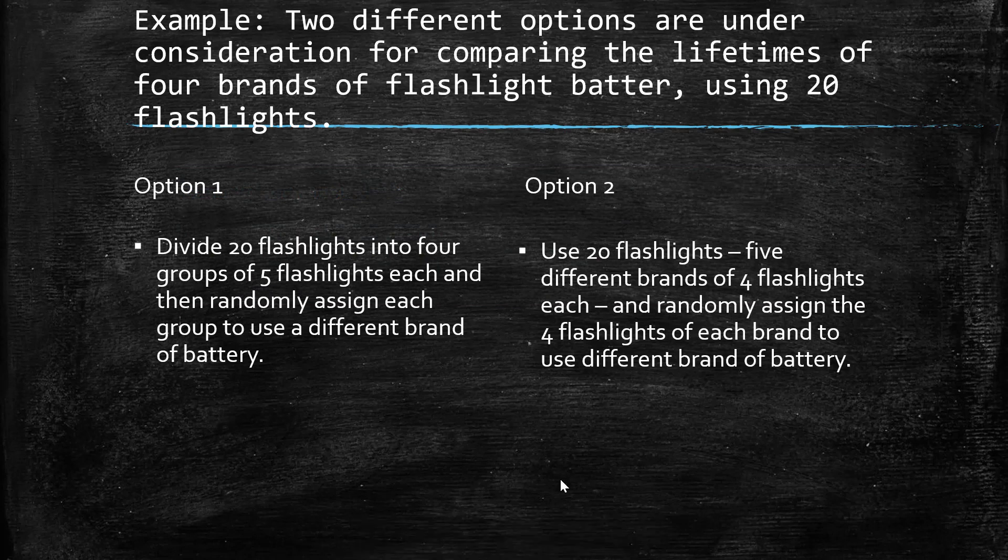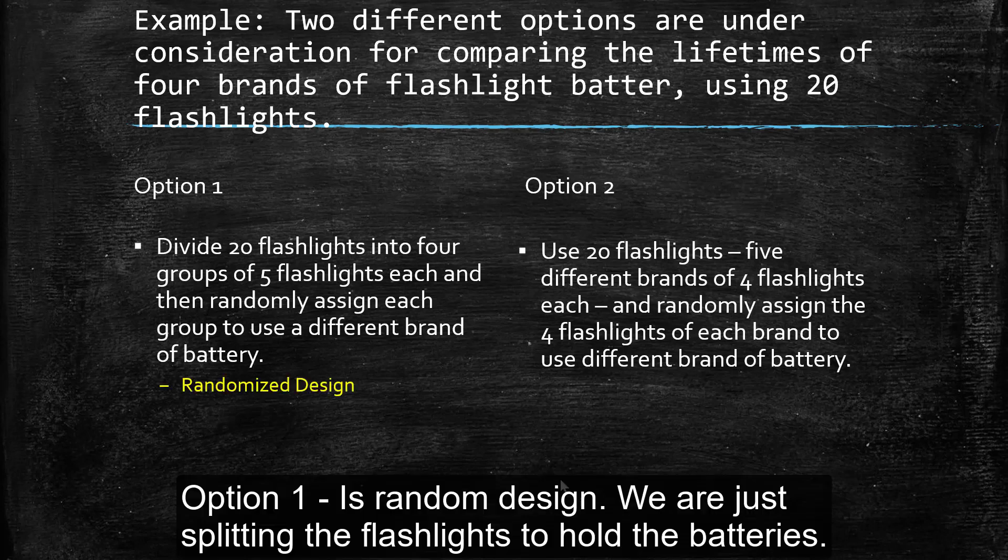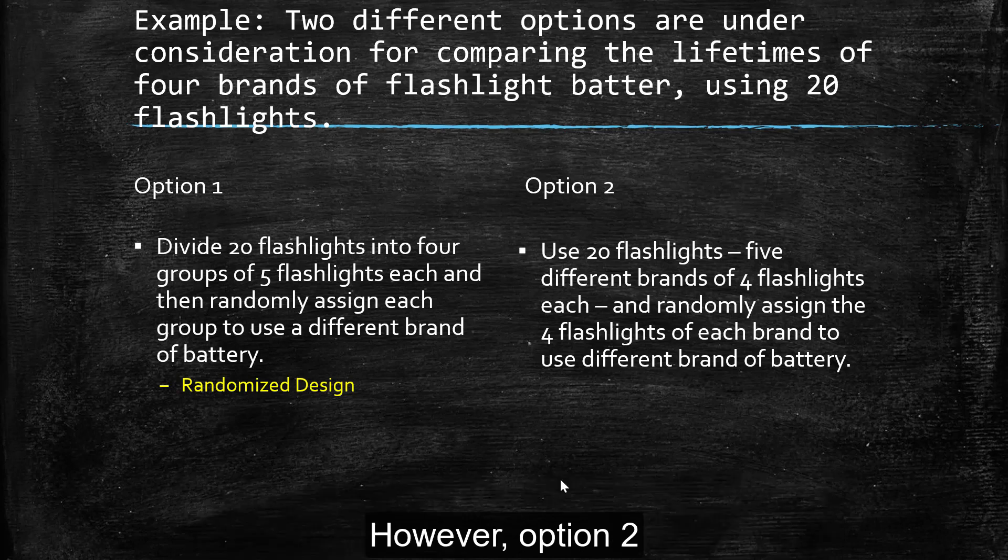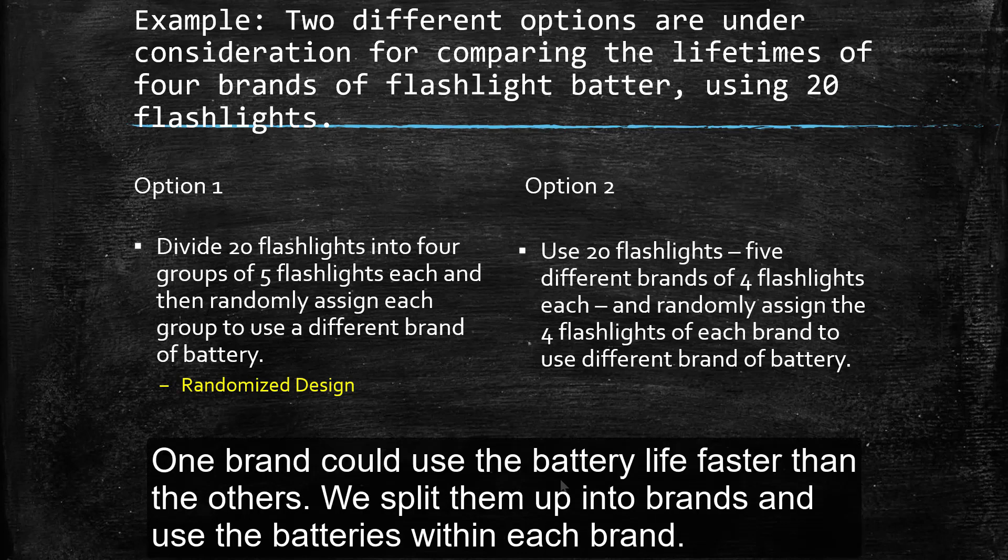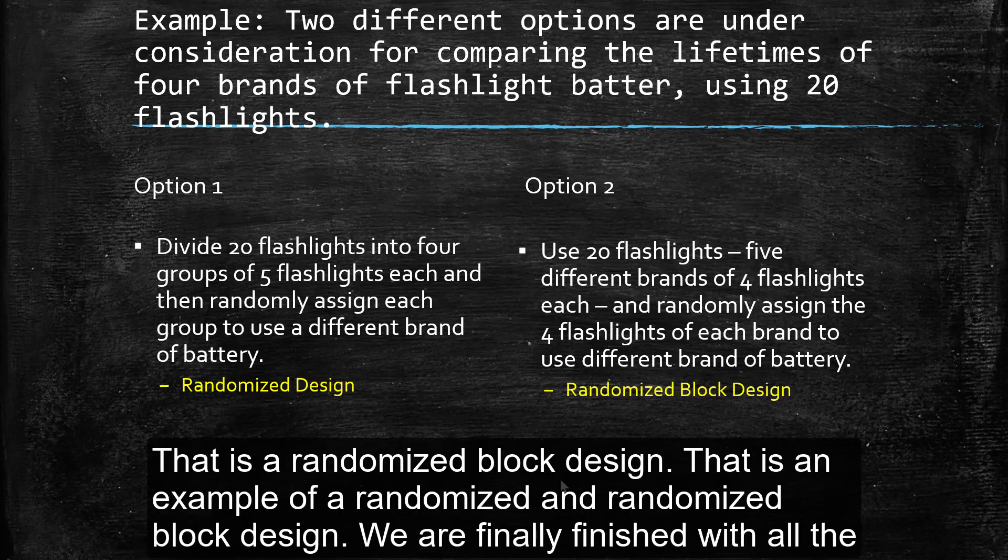So here's an example. Two different options are under consideration for comparing the lifetimes of four brands of flashlight battery using 20 flashlights. So option one, we could divide 20 flashlights into four groups of five flashlights each and then randomly assign each group to use a different brand of battery. That's just a randomized design. We're just splitting the flashlights and the batteries. However, if we use the 20 flashlights and there are five different brands of four flashlights each, so we're saying that, well, it could be the flashlight brand, right? That could be the lurking variable that's causing one flashlight to use the batteries more than the other. So we split them up into brands and then use a different brand of battery within each group of those. So that is a randomized block design.